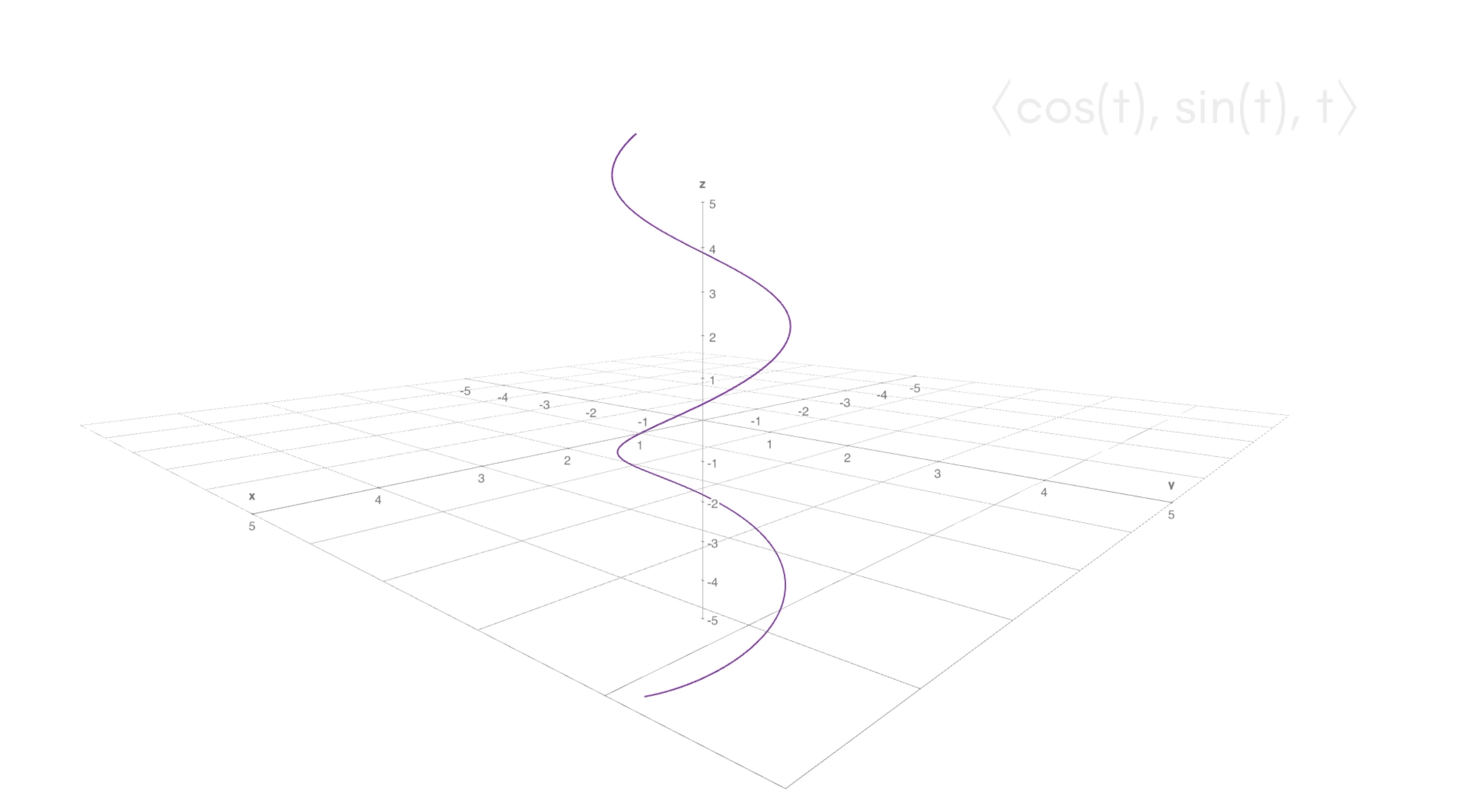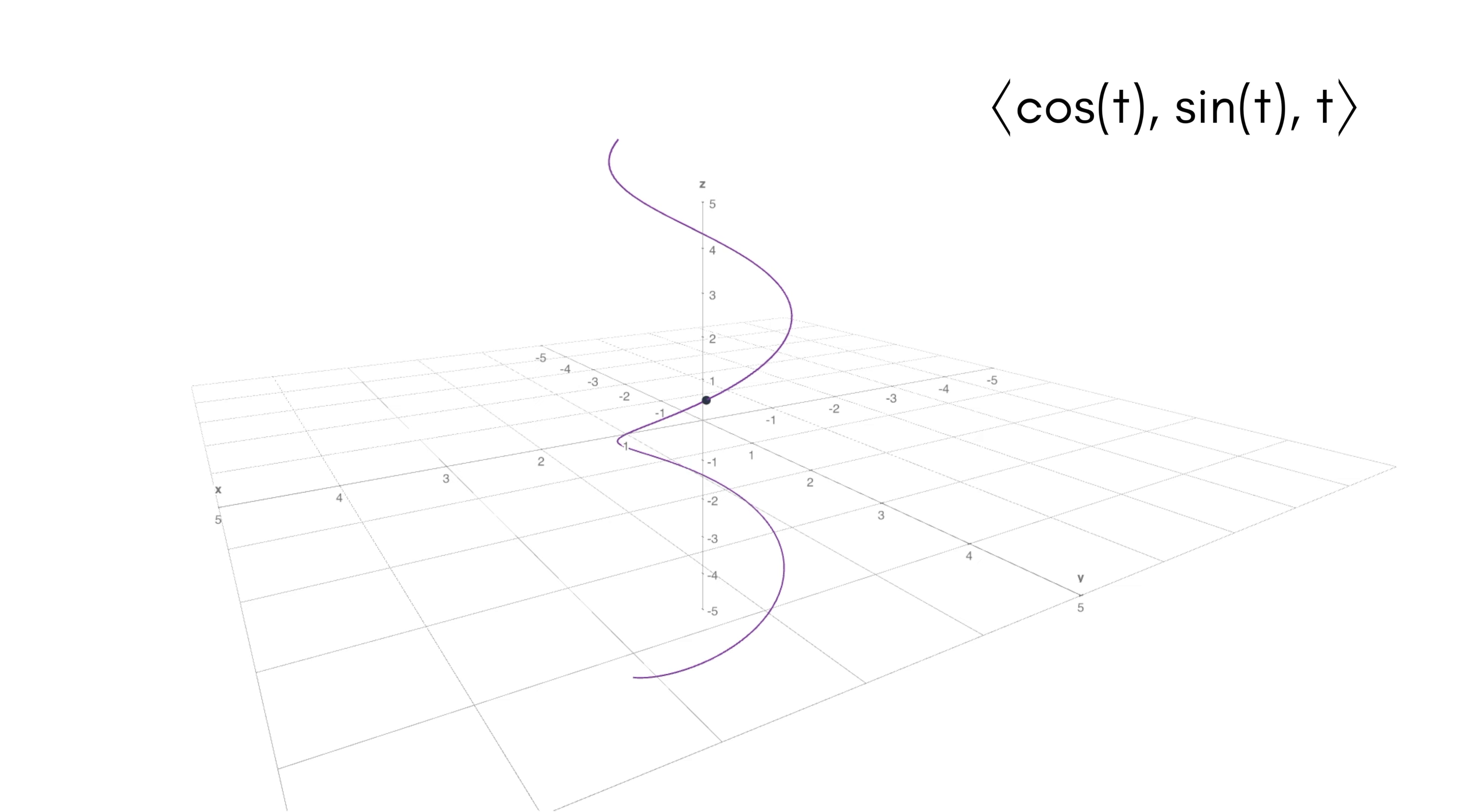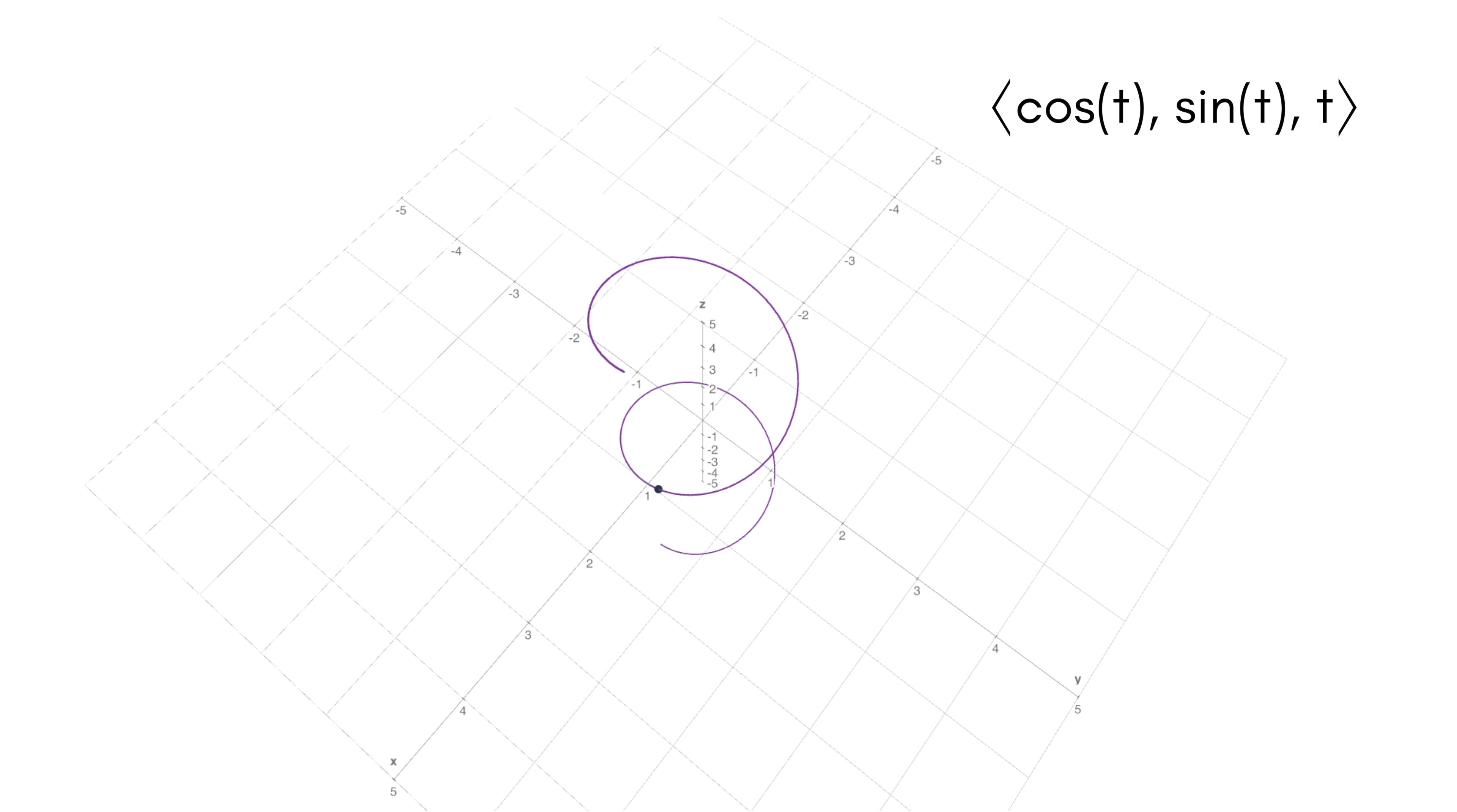So the first vector-valued function I've graphed here is cosine of t, sine of t, and t. So this is a helix shape. You can watch as t progresses that this little point just sort of circles its way up the top. And so it's basically like we have a spiral, but it's just spiraling up since the z value is t, so it's increasing with t. As t gets bigger, the height is going to get bigger.